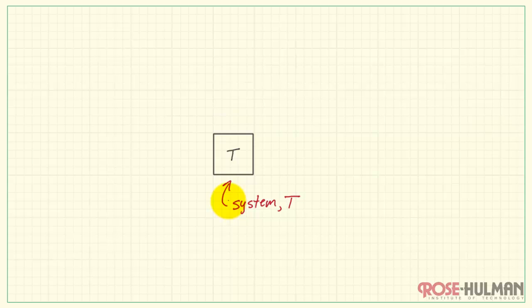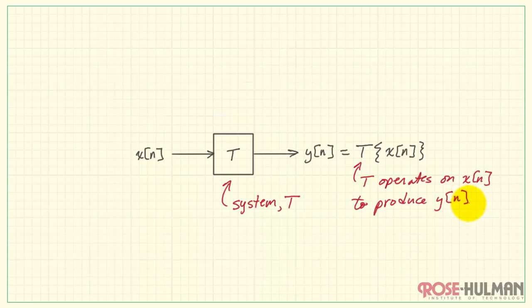T has an input x of n, and this would be a sequence of values, and it produces an output sequence y of n. In terms of notation, we say that the system operates on the input sequence x of n to produce the output sequence y of n.